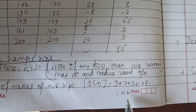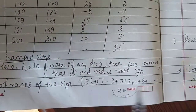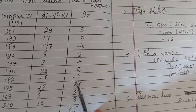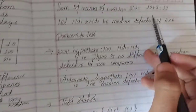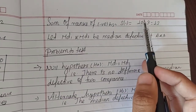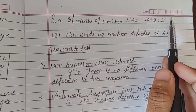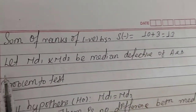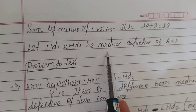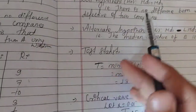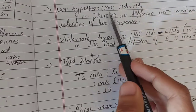The total positive rank sum S plus is 42. The negative sign sum includes 10 plus 3 equals 13, so S minus is 13. Using significance level 0.05 for a one-tailed test.